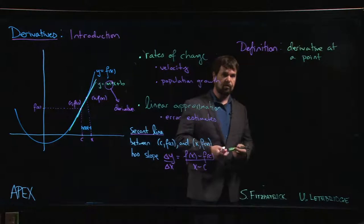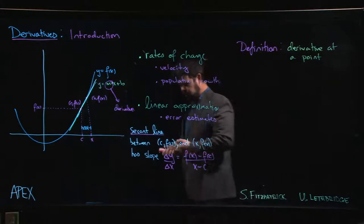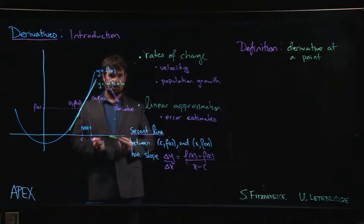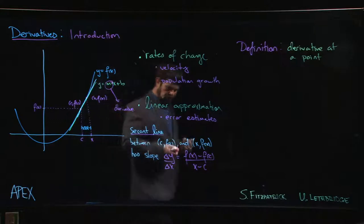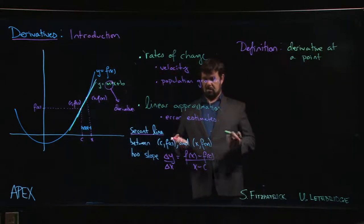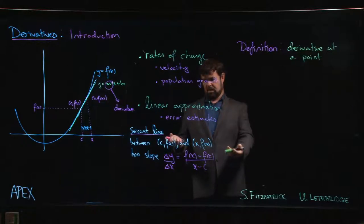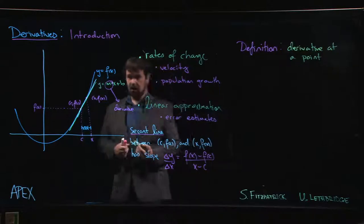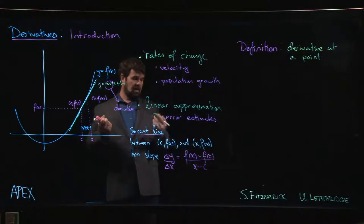When people were first trying to understand the derivatives, people like Newton and Leibniz, they were working through the idea of the derivative, using it very successfully to solve problems from physics, from astronomy. A lot of people were really critical of this idea that you could in some sense almost be dividing by zero.